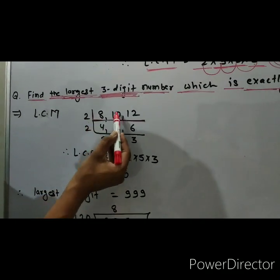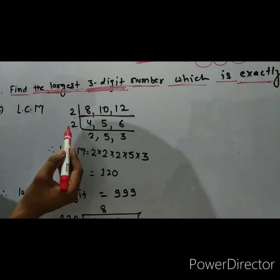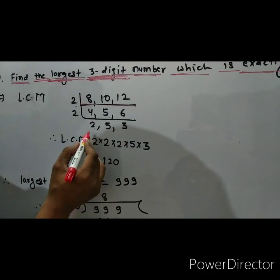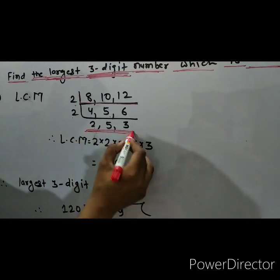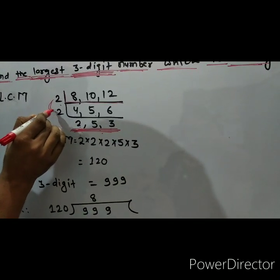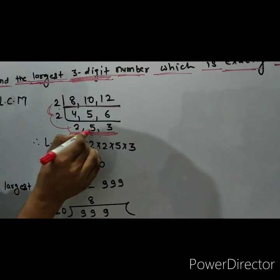So it is 2, 4's are 8, 2, 5's are 10, and 2, 6's are 12. Again, 2, 2's are 4, 5 remains the same today, and 2, 3's are 6. Now here, the given numbers are not divisible by any same table. So we are multiplying this: 2 into 2 into 2 into 5 into 3.